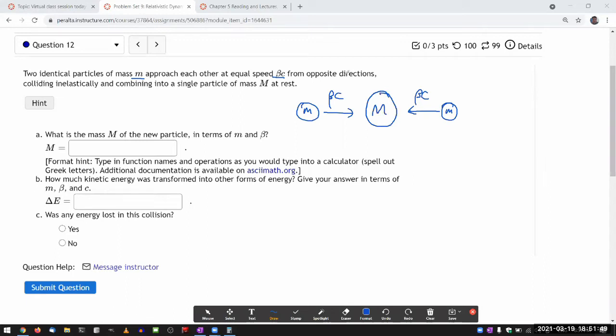It would have to be at rest in order to conserve total momentum, resulting in a single particle of big mass M. And it's asking what is the mass M of the new particle in terms of m and beta.